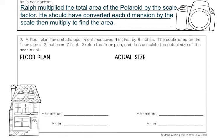A floor plan for a studio apartment measures 9 inches by 6 inches. This is the blueprint. The scale listed on the floor plan is 2 inches for every 7 feet — so 2 inches on the blueprint equals 7 feet in real life. Using that consistent scale factor, the scale drawing is proportional to real life, so you can make predictions about what furniture fits. Go ahead and draw a rectangle with dimensions of 6 by 9 — here's my rough sketch with width 6 and length 9, where the 9-inch side is longer.